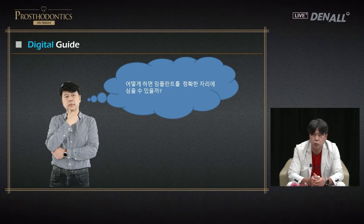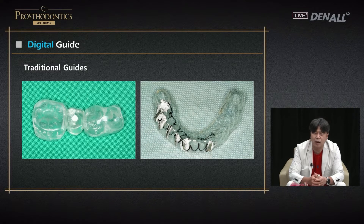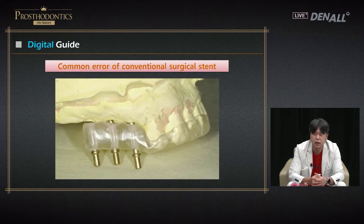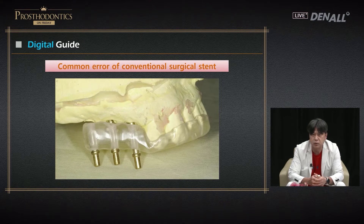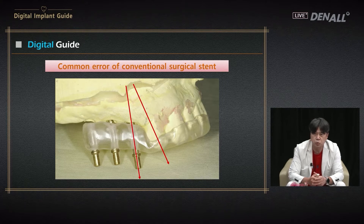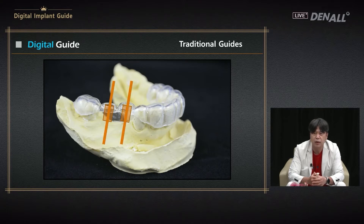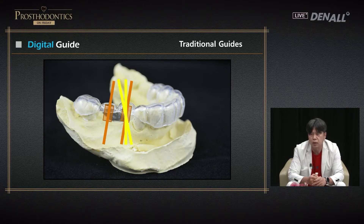How can we place implants precisely? We have tried for a long time. The conventional surgical stents have limitations. They are designed on a model or panorama, so they look well-placed, but toward the root the implant and root can touch each other — we have limited information. A surgical guide using vacuum looks okay in terms of positions. However, the guide channel is short, so when you drill, it can go in different directions. There is a limitation with that.